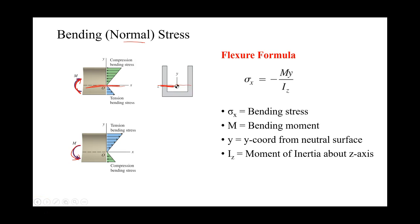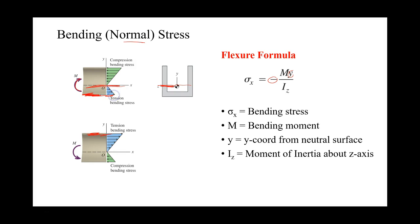When we use the flexure formula, we can see that when y is positive and we have a positive bending moment, at the top surface of our beam we will have a negative stress because of the negative sign. If y is negative, such as at the bottom of the beam, and we have a positive bending moment, the negative y and the negative sign give us a tensile stress, as we can see in the graphic.